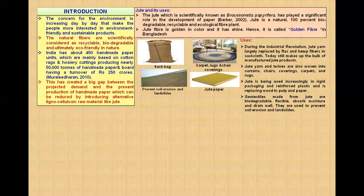Jute has several types of uses. During the industrial revolution, jute largely replaced flax and hemp fibers as sack cloth. Today, jute still makes up the bulk of manufactured jute products. Jute yarn and twines are also woven into curtains, chair coverings, carpets, and rugs, and it is increasingly used in rigid packaging, reinforced plastic, replacing wood in pulp and paper industries. Also as geotextile, jute is biodegradable and flexible, absorbs moisture and drains well, and is used to prevent soil erosion and landslides.